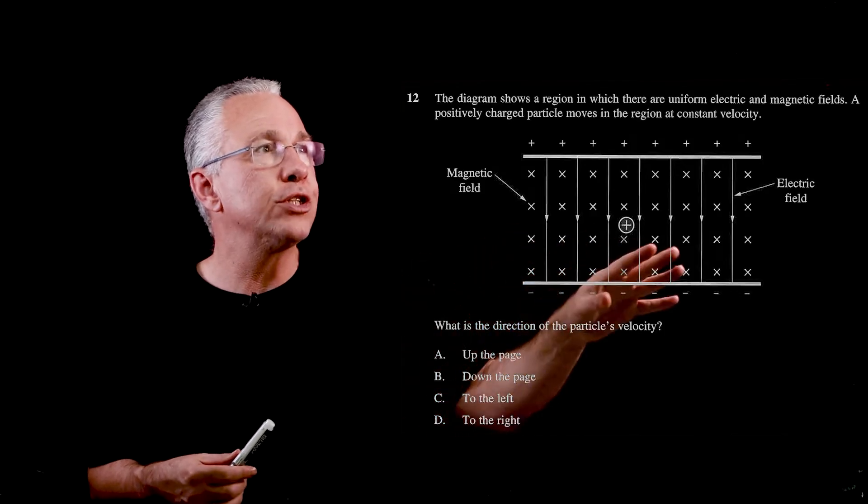Looking at the other responses: increasing the frequency just extends further along the same line. Decreasing the intensity decreases the number of photons but does not change the energy of each individual photoelectron, so the graph remains the same. Regarding decreasing the maximum energy of photoelectrons — they're already emitted, and you could only change their energy by applying an external electric field, which is not the case here. So the answer is definitely B.